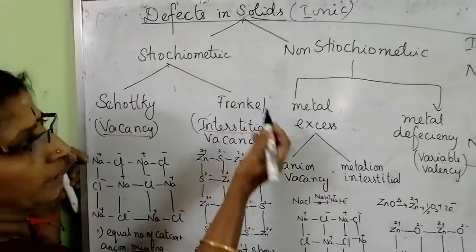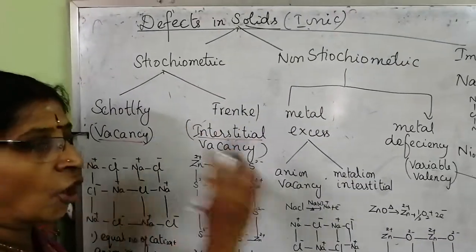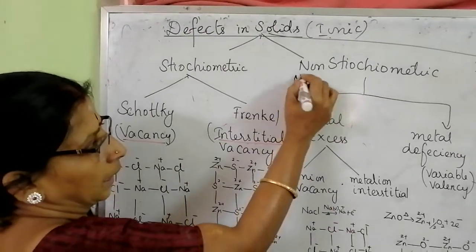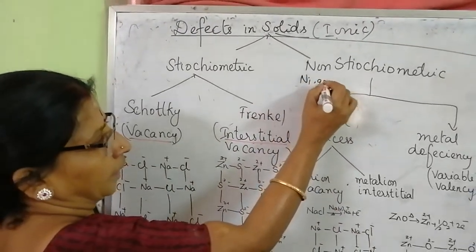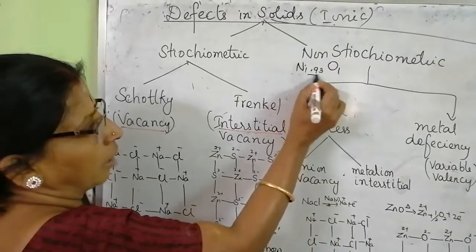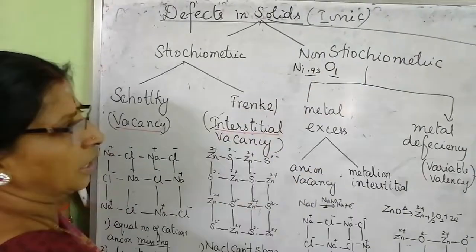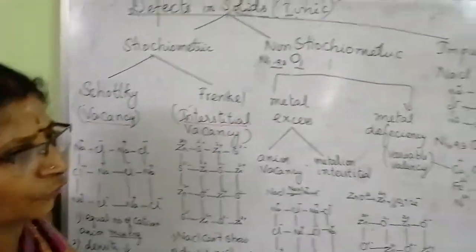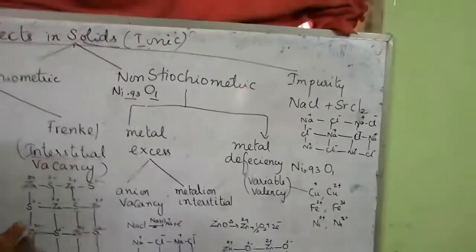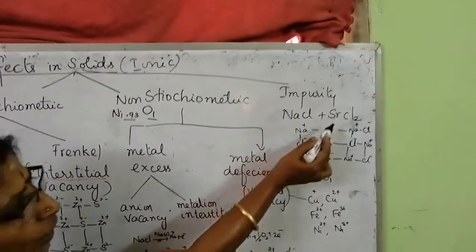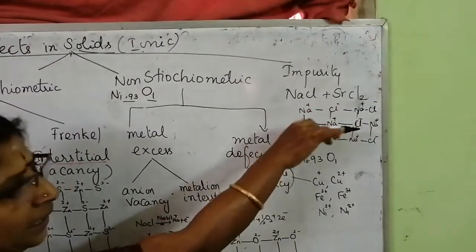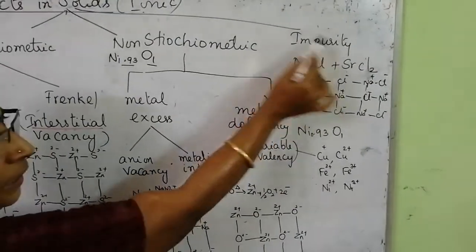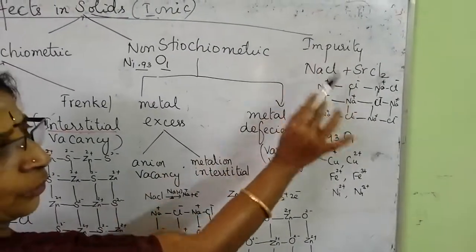Non-stoichiometric: they are not in proper whole number ratio. For example, Ni₀.₉₃O₁ — are they in whole number ratio? No. Then it is called non-stoichiometric. Impurity defect: in some solids, we are putting another ionic solid as an impurity. This is impurity defect.